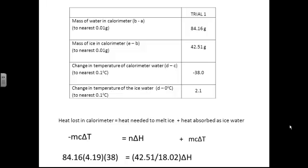Next, we add the heat absorbed as ice water. We take the mass of the ice cube, 42.51 grams. The ice cube has melted, so it's turned to water. The specific heat capacity of water is 4.19. The change in temperature of that ice water went from zero degrees up to 2.1, so it's just 2.1. Study that equation and make sure you understand everything that's going on.